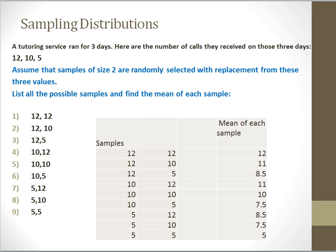In this next example, we're going to look at how to take a small population of values and how to create what's called a sampling distribution from these values. We're going to figure out how to calculate the mean of the sampling distribution, and finally show that the mean of the population and the mean of the sampling distribution are the same. Our small population of values is generated by the following.